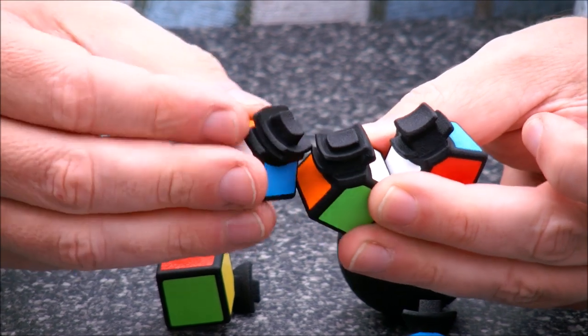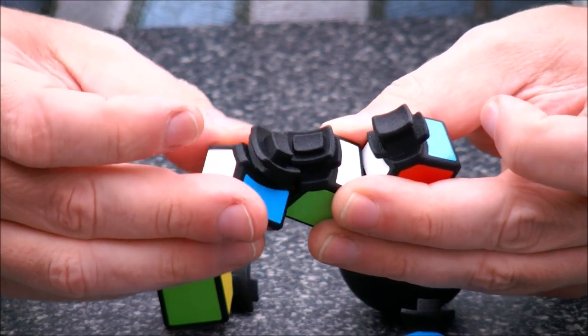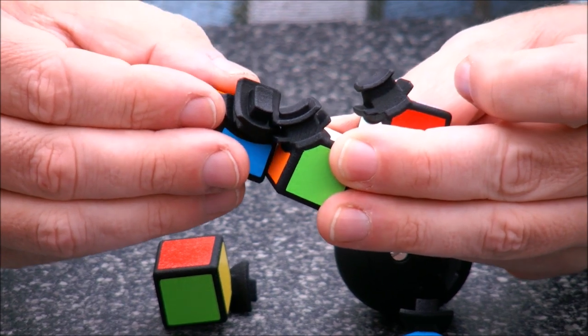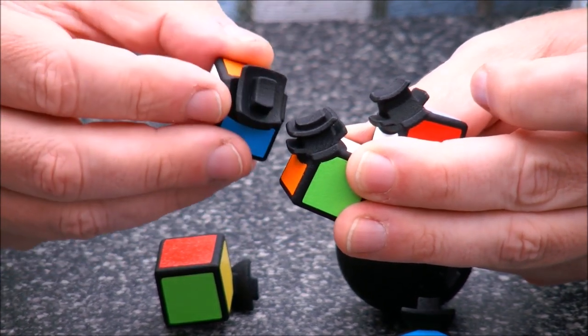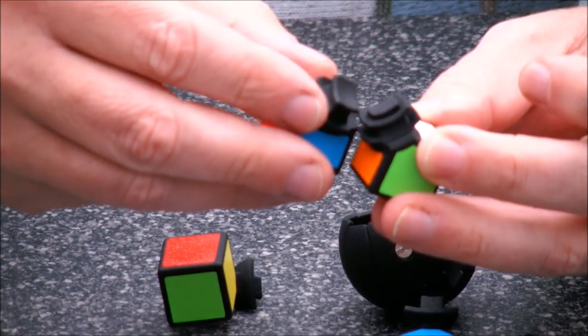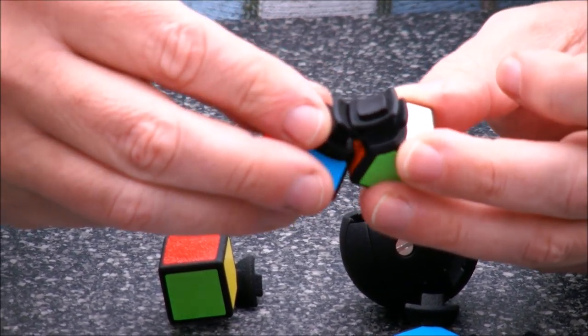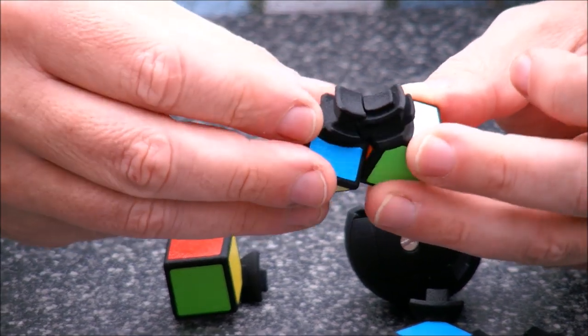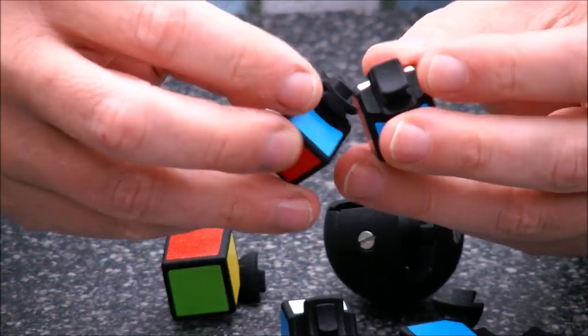And when one edge moves along the other edge, they don't interfere with each other. I hope you can see it. So, edge number one can pass edge number two. Edge number two can pass edge number three. Like this. And these also can pass each other.